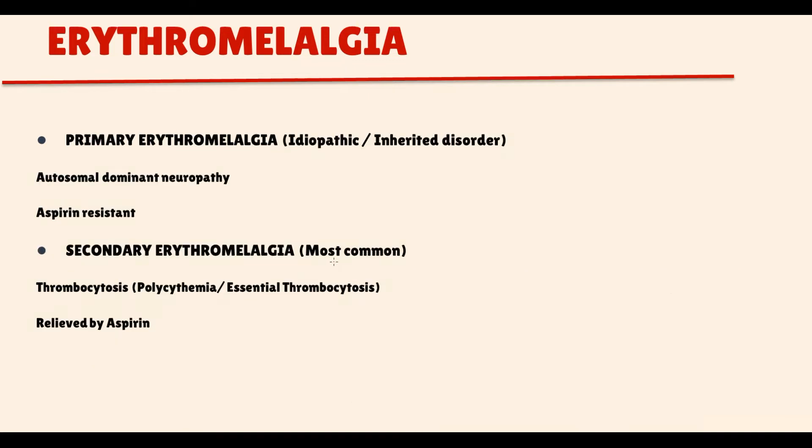Erythromelalgia can be primary and secondary. The most common erythromelalgia is secondary, which is caused by thrombocytosis. We have two conditions where platelet count is extremely high: polycythemia and essential thrombocytosis. In both these disorders, there is a significant risk of microthrombi formation. Important that in this situation, aspirin is the drug of choice.